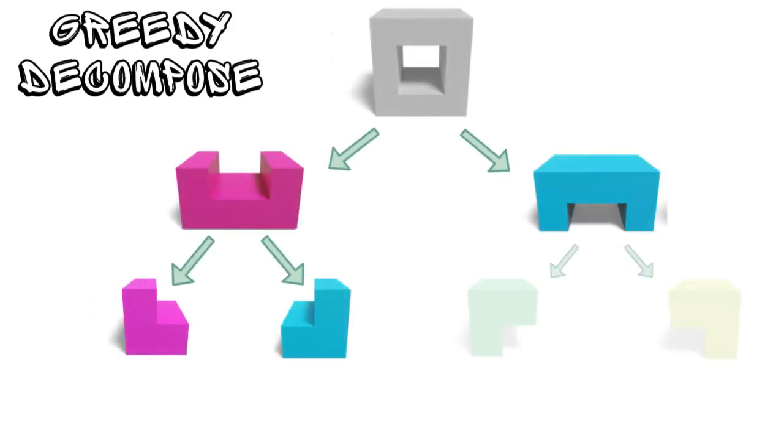They then design a heuristic cost function to greedily decompose the 3D mesh through top-down partition or bottom-up clustering, until the concavity of each decomposed component is within a predefined threshold.